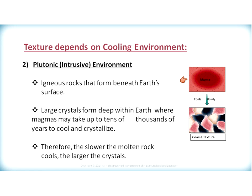Therefore, the slower the molten rock cools, the larger the crystals will be. As the magma cools slowly, the crystals have lots of time to grow — thousands of years or even longer. As a result, these crystals can grow fairly large, and we get a coarse grain texture. So in conclusion, a plutonic or intrusive environment is deep within the Earth, where magma cools at a very slow rate, giving ample time for crystals to grow larger. It forms a coarse grain texture.